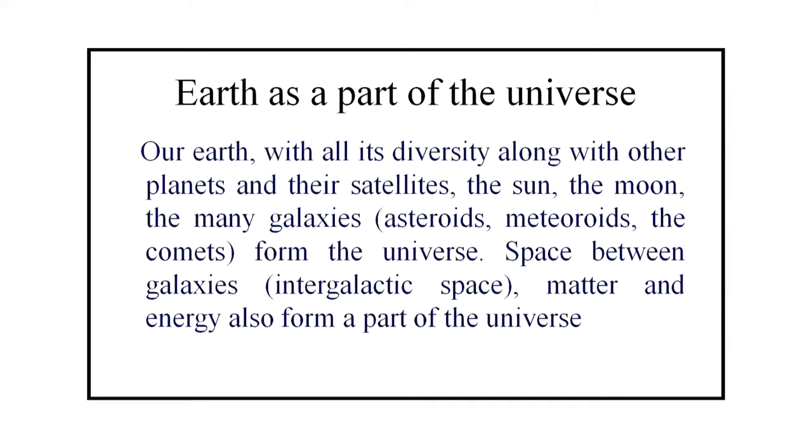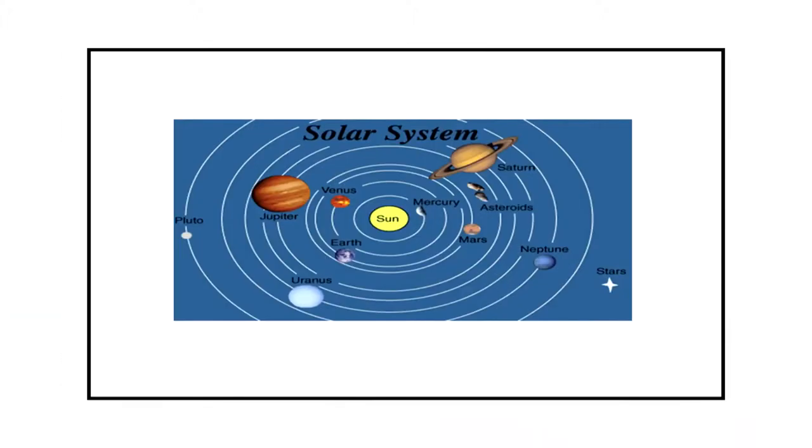The next topic of this lesson is Earth as a part of the universe. Our Earth with all its diversity, along with other planets and their satellites, the sun, the moon, and the many galaxies forms the universe. Space between galaxies, matter and energy also form a part of the universe. This is an overall picture of our solar system.